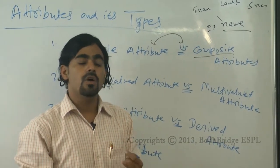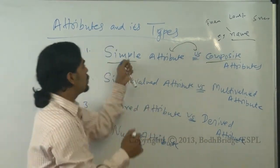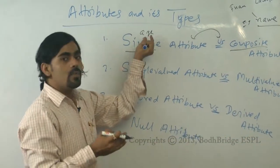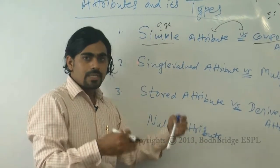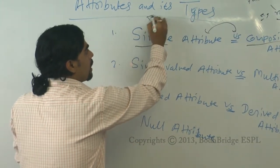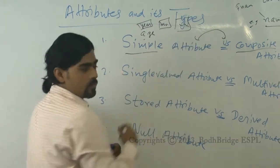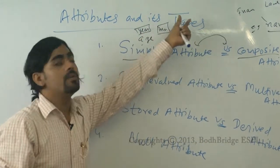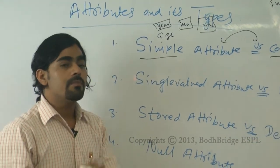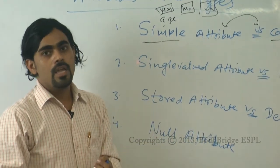If any attribute is non-divisible — at its minimum, indistinguishable level — it is called a simple attribute. For example, 'age' is typically a simple attribute. However, age can also be divided into years, months, and days, making it a composite attribute depending on how you design your database.